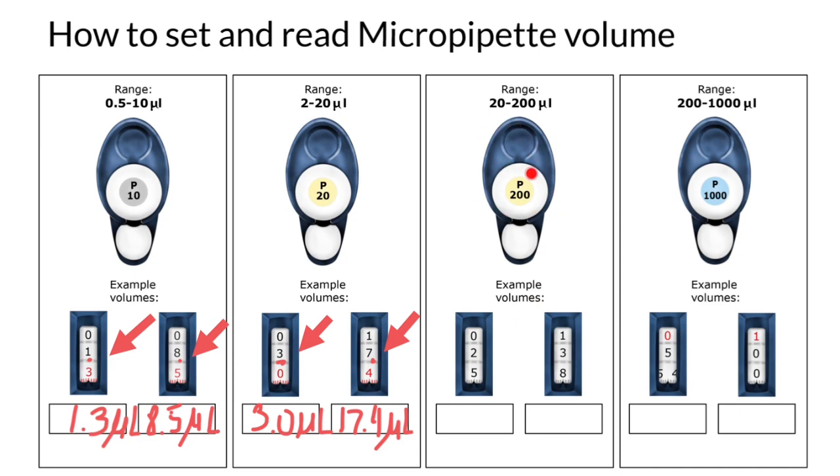Next one is easier. The volume is up to 200. The range is between 20 and 200 microliters. And we read this number just as it is, 25 microliters. And the next one is 138 microliters.